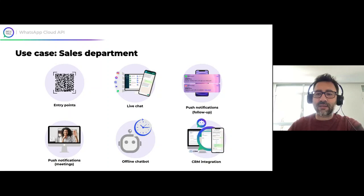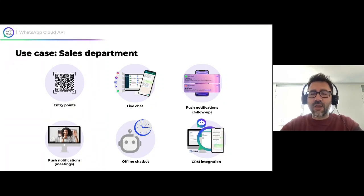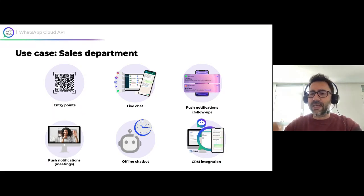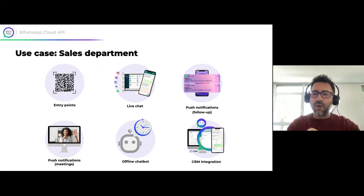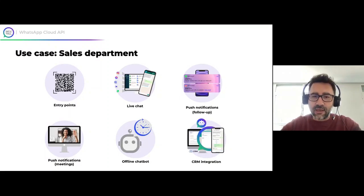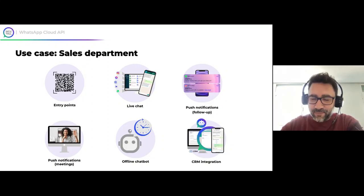You can also work with automatic notifications. For example, if you have a meeting with a client, you can send them automatic reminders or rescheduling notifications. You can schedule a meeting and link the push notification with a chatbot to reschedule or book a new meeting. One of the best chatbots for sales is the offline hours chatbot. Your team probably isn't working 24 hours, so if you work from 8 to 8, you need a chatbot to cover the other times.